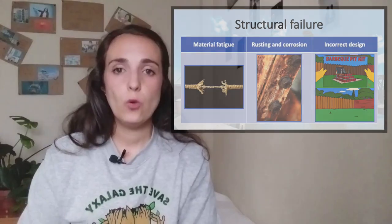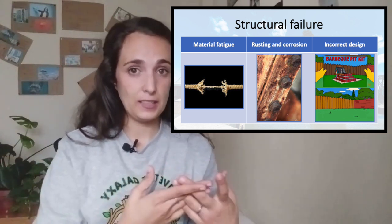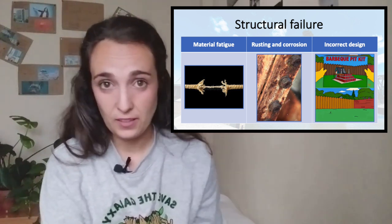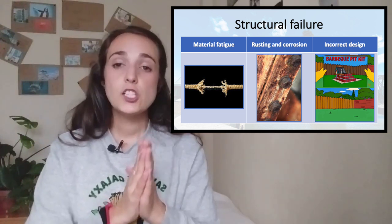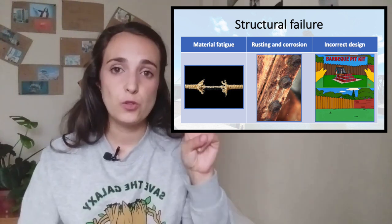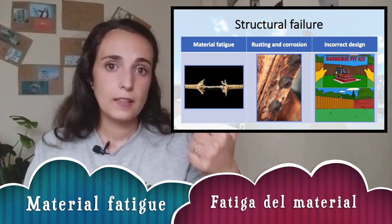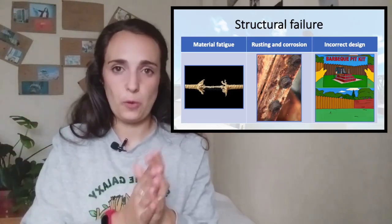A good structure should be stable and should support external and internal forces. When this doesn't happen, there is a structural failure. Structural failures usually are due to three main reasons. The first one is material fatigue — that means the material is too old, weak, or not of good enough quality to support all the loads, weights, forces, or whatever.